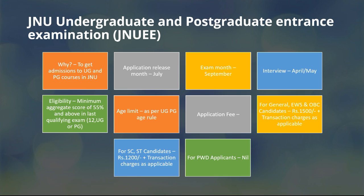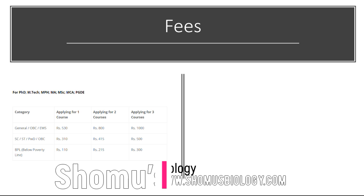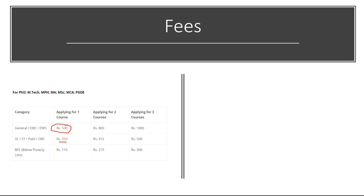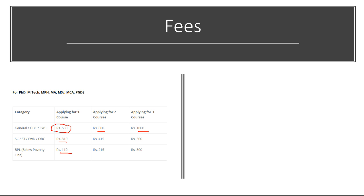This exam is not only for UG and PG admission, but also for PhD, MTech, MPH, MMSc, and other programs in JNU. For PhD and similar candidates there are different rules. You can apply for one to three courses in this university. If you apply for one course, for General, OBC, and EWS the price is 530 rupees; for SC/ST it is 310 rupees; and for BPL (below poverty line) it is 110 rupees. If you apply for two subjects, it will be 800 rupees — that means 400 for each. And if you apply for three subjects, it will be 1000 rupees. As the number of subjects increases, it's a good scheme since you will ultimately end up in only one particular stream.